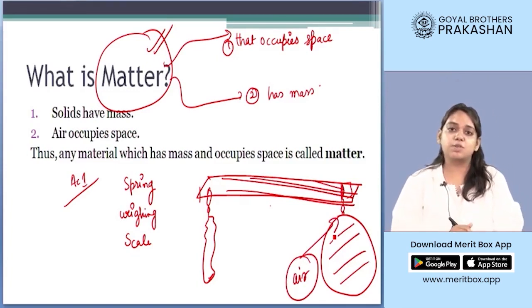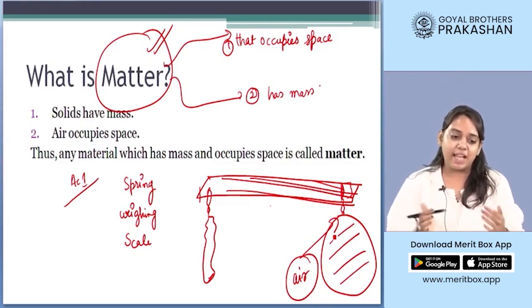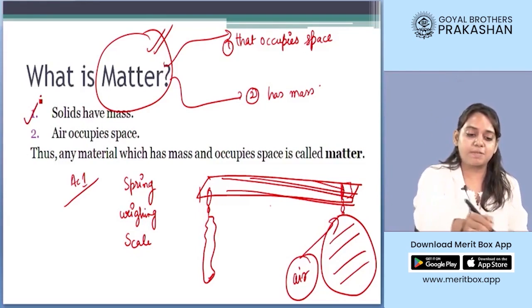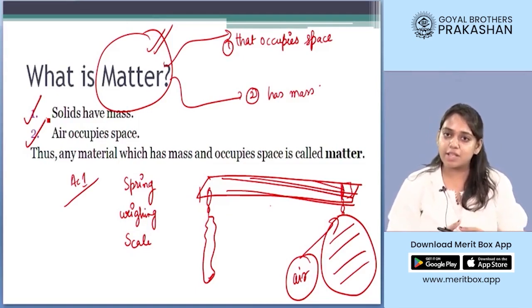In this way we have observed that anything which occupies space and has mass is known as matter. Solids have mass, liquids have mass, and gases also have mass, and gases can occupy space.